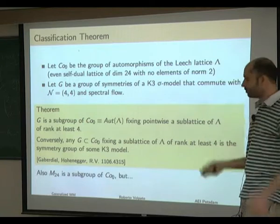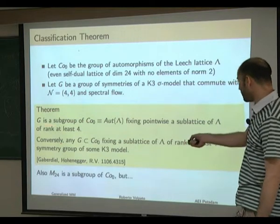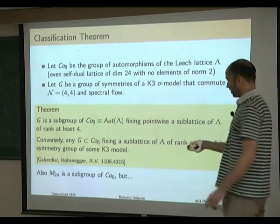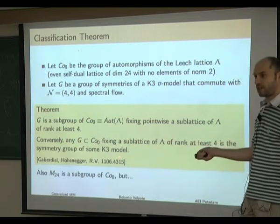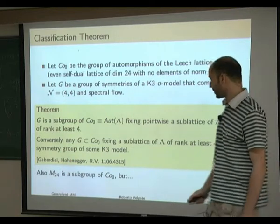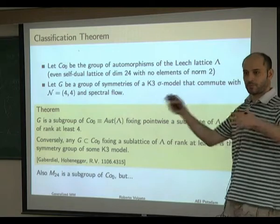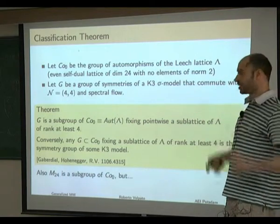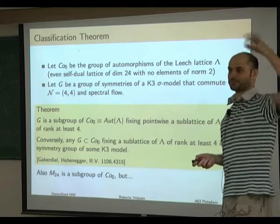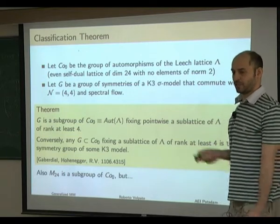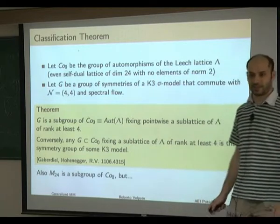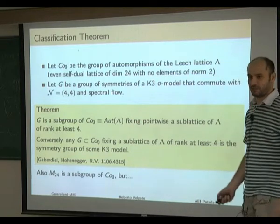There is also a converse theorem: if you have any subgroup of the Conway group with this property, then there exists some nonlinear sigma model on K3 which has group G as its group of symmetries. This is based on standard assumptions about the moduli space of K3 surfaces and the existence of nonlinear sigma models at various points in the moduli space.